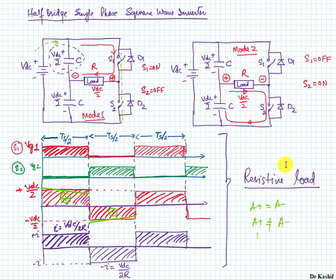This concludes the operation of the half-bridge single-phase square wave inverter — a very basic inverter circuit that takes DC input and produces a square wave output. We have discussed it with a resistive load. In the next lecture, we will discuss the same circuit with an inductive load and examine what the current waveform will look like.